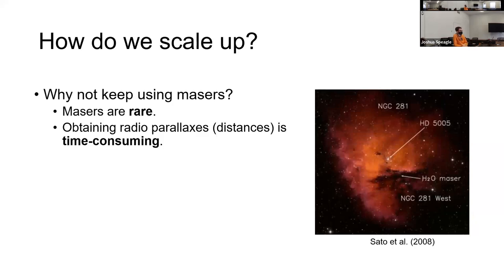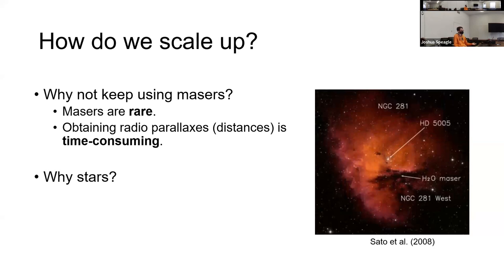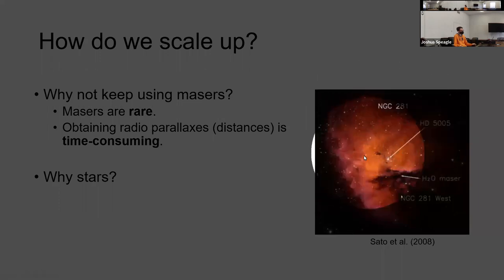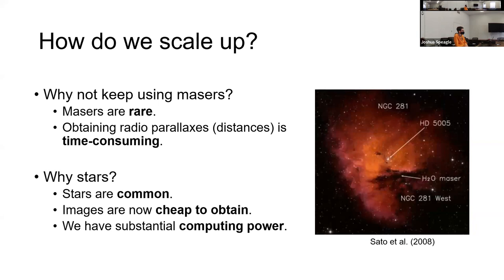The question is how do we scale up today? I want to focus on using an alternative to masers — these specialized sources that require very specific conditions, only observed in particular star-forming regions, and are very expensive to observe. Stars, on the other hand, are everywhere. We have tons of surveys — SDSS, Gaia, LSST, PanSTARRS, 2MASS — and now a lot more computing power to handle more sophisticated inference techniques.